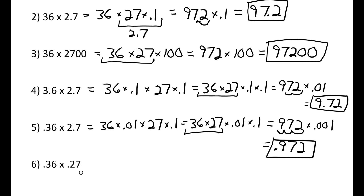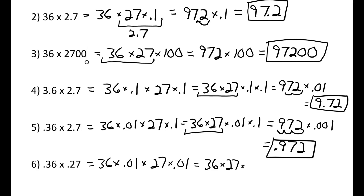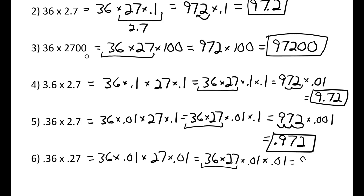Lastly, number six: 0.36 times 0.27. I write 0.36 as 36 times 0.01, and 0.27 as 27 times 0.01. Using the commutative property, this becomes 36 times 27 times 0.01 times 0.01. Since 36 times 27 is 972, and 0.01 times 0.01 equals 0.0001, I move the decimal point four places to the left, which gives me 0.0972.